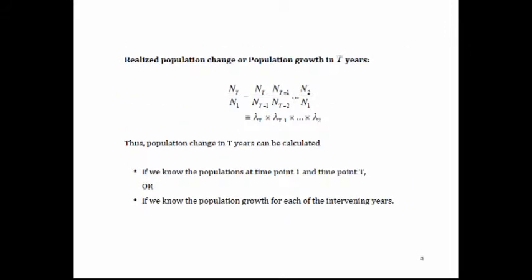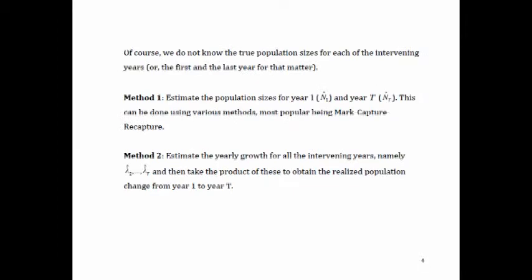If we have t years instead of one year, the Realized Population Change is basically the ratio of population size at time t to population size at time 1, which we can write as a product of the lambdas — the growth rate at each of those years. So we can either calculate it from population counts or by calculating the growth rate in each intervening year. Those are the two basic methods.